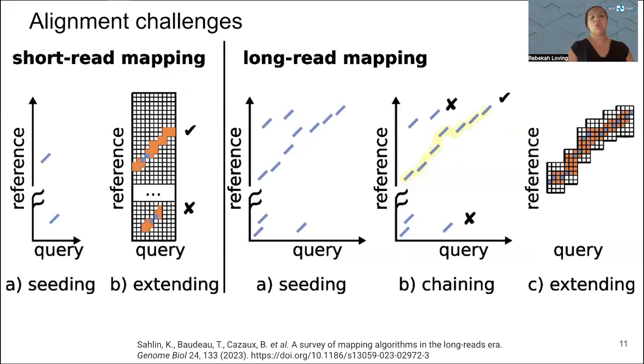In short read mapping, a query from your read can be extended to see where it matches best in the reference. Whereas in long reads, this becomes too computationally expensive to do only with extending. Instead, you need to also use a chaining approach because you get a lot more spurious queries mapping to places in the reference that you want to ignore, because the sequencing error rate is much higher in long read RNA-seq than in short read RNA-seq. One solution that has been used is chaining. In LR Kallisto, we do use something that resembles chaining.